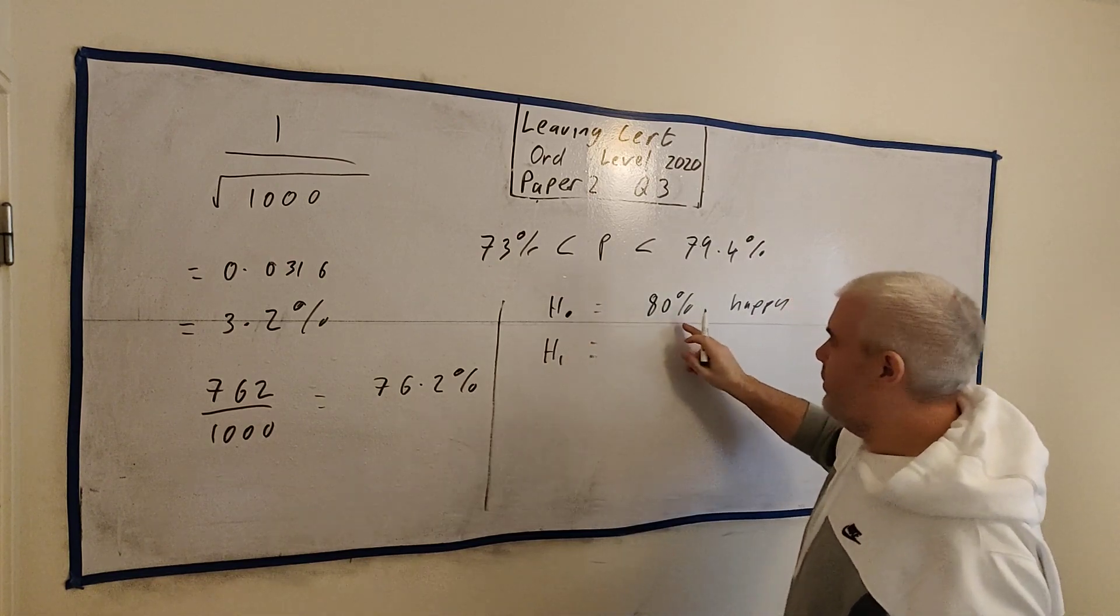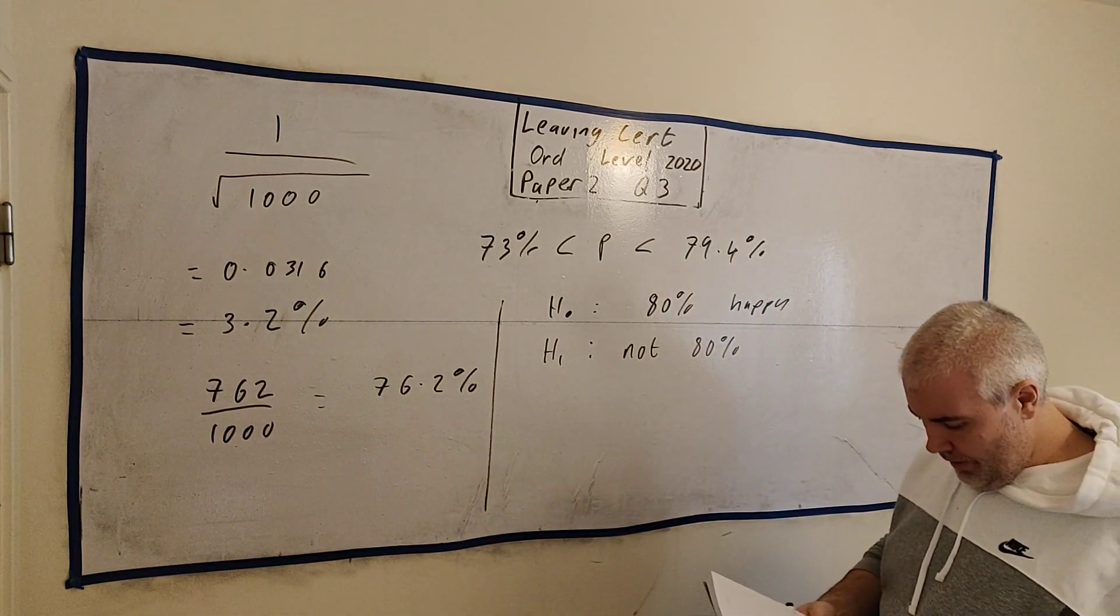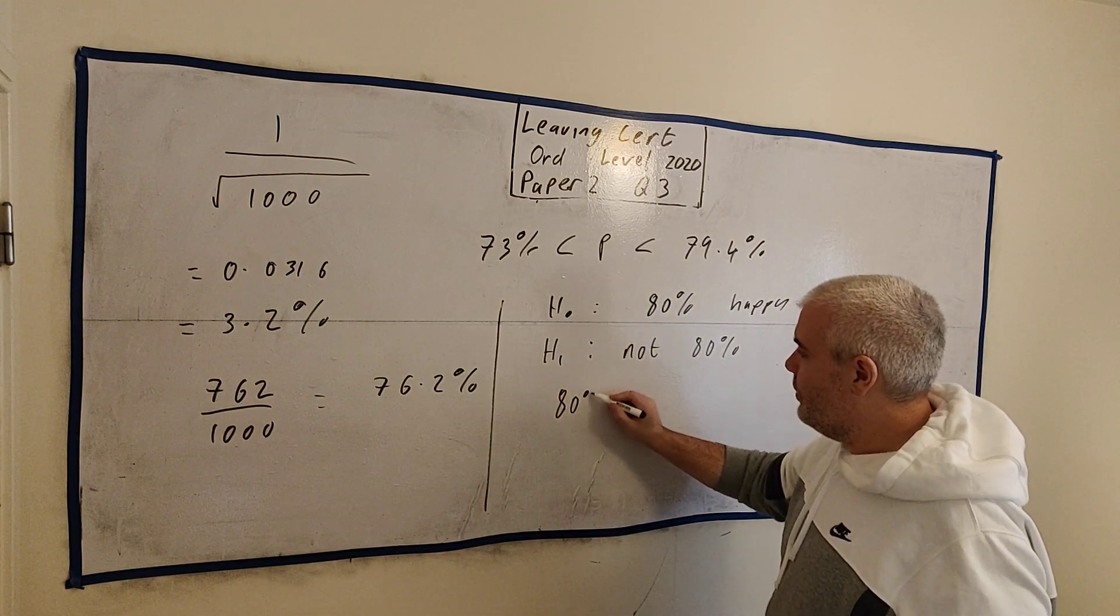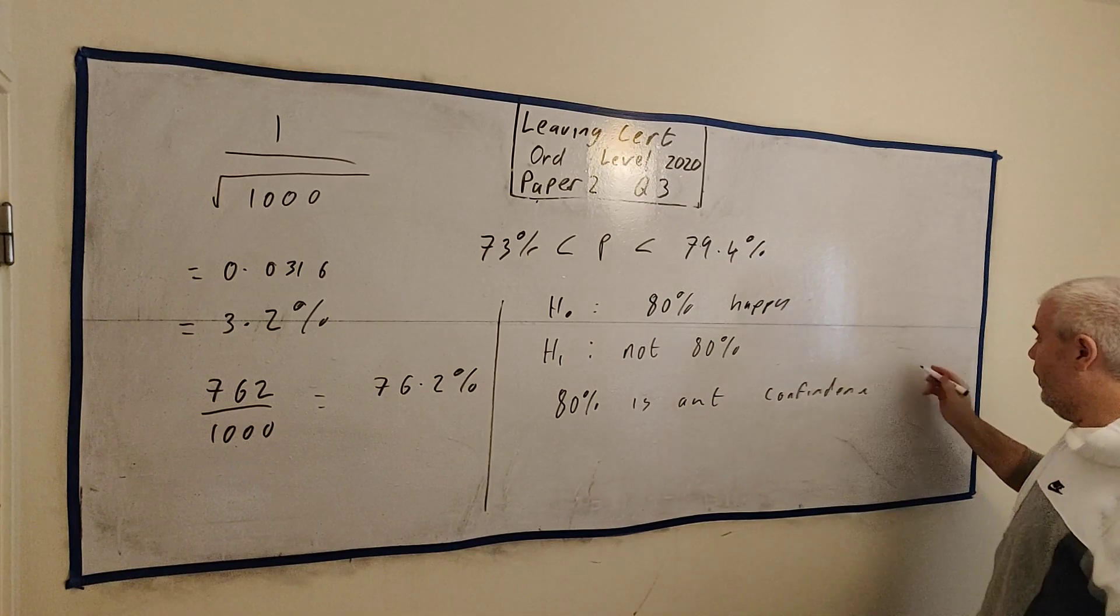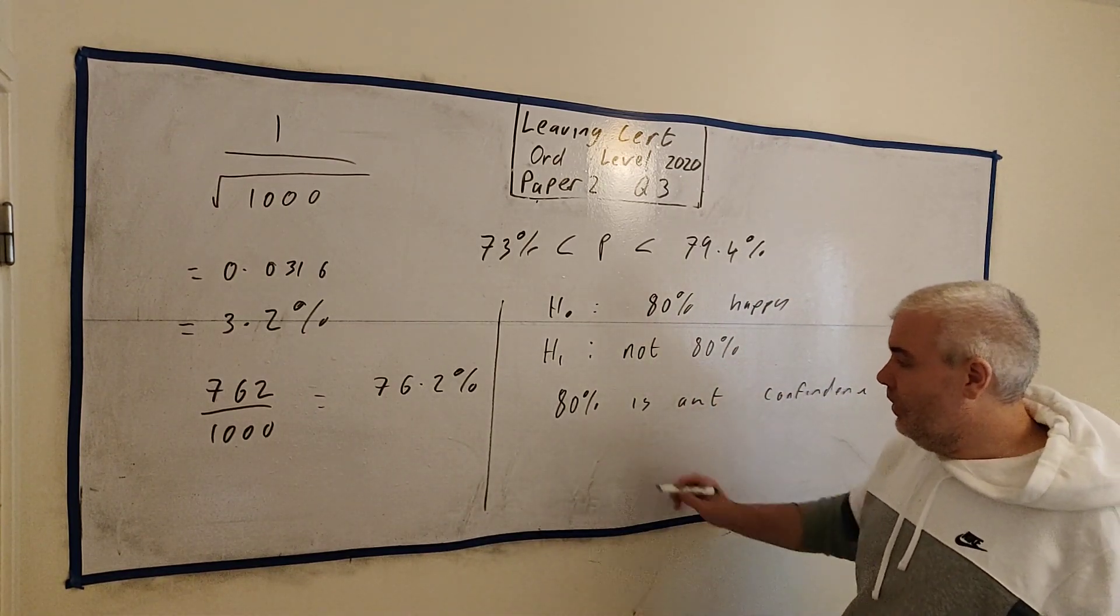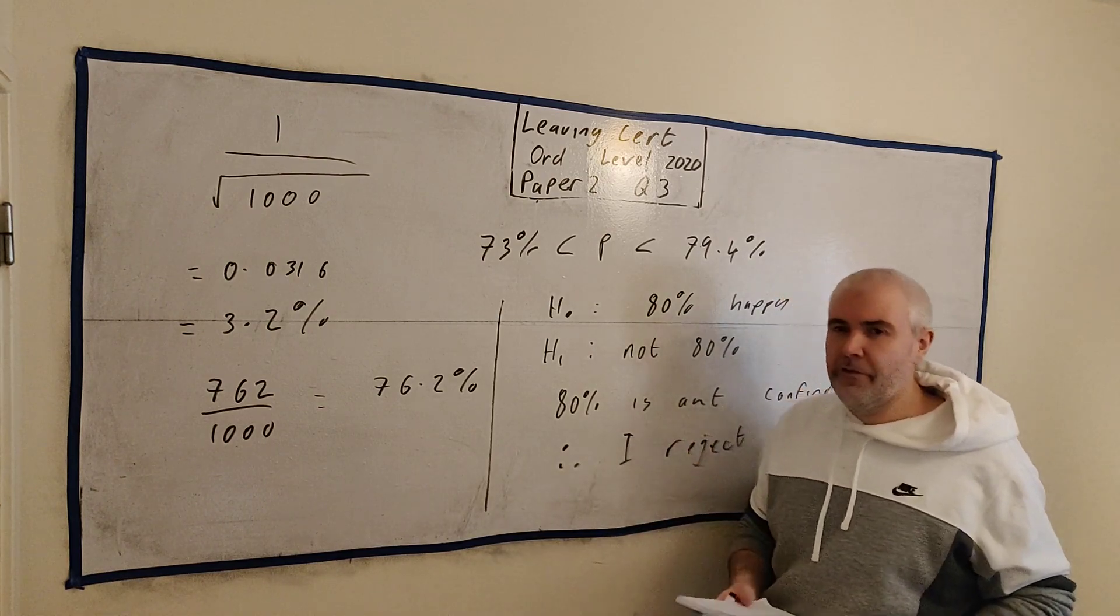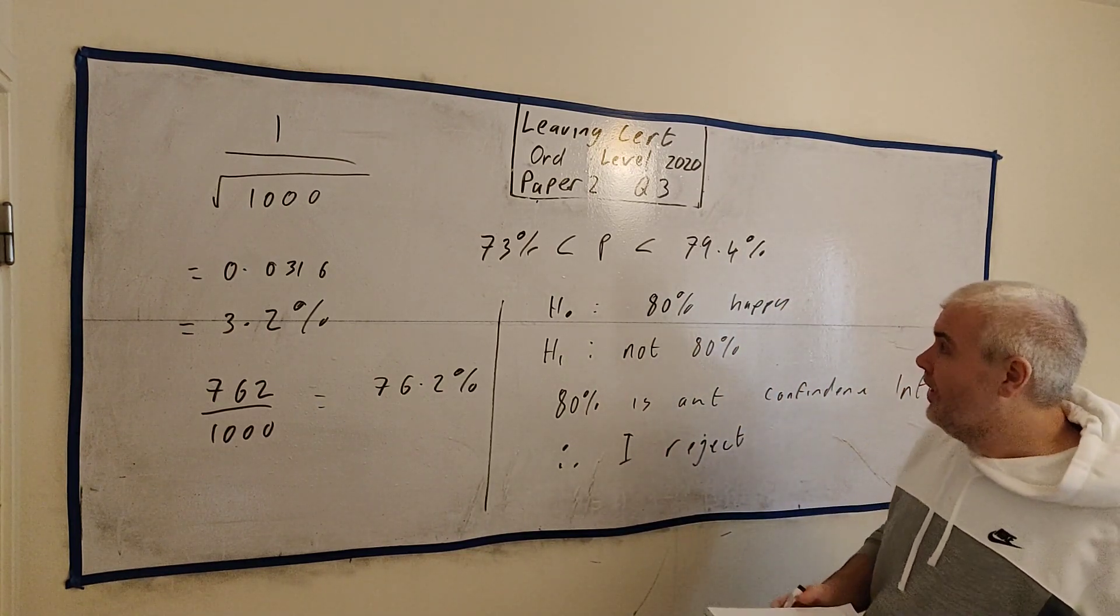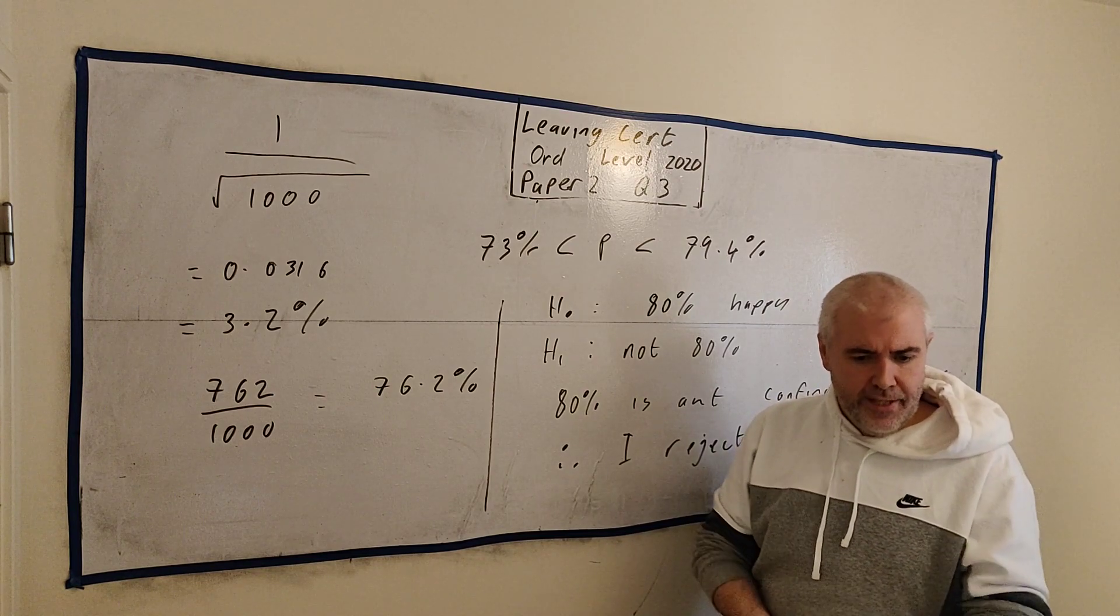And then they want you to write the opposite of this. This is the null hypothesis. The opposite of that. Well, I would just write not 80%. They want you to come to a conclusion. I wrote down 80% is outside confidence interval. Therefore, I reject. In an exam, spend a few extra minutes writing that. Any amount of English saying, I reject this because it's outside the interval will probably be enough to get you full marks.